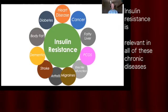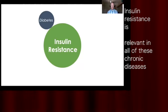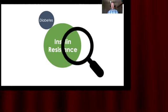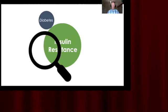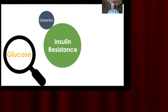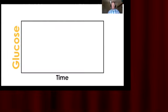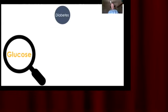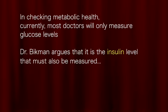Insulin resistance is extraordinarily relevant in the non-infectious chronic diseases we're all worried about. If we appreciate the role of insulin resistance in type 2 diabetes, we look at type 2 diabetes with a far greater degree of accuracy. The typical marker we search for is glucose — that's what we want to track. Over the life of a person progressing towards type 2 diabetes, glucose levels start normal and then become progressively elevated. Currently, most doctors will only measure glucose levels.